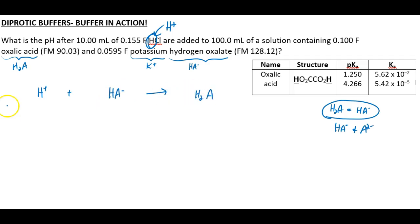So now it would be helpful to make an ICE table because we've got to figure out how many moles of HA minus were consumed by the H plus and how many more moles of H2A were produced. So we know the concentration of the H plus that was added. We know the volume. So I think that works out to be 0.00155 moles of H plus that we're adding.